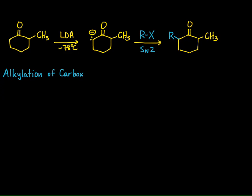We can control alkylation of ketones and aldehydes if we simply treat them with LDA — a very strong base — to give us the enolate in high yield, and then react that with an alkyl halide. We can also alkylate a carboxylic acid as well.